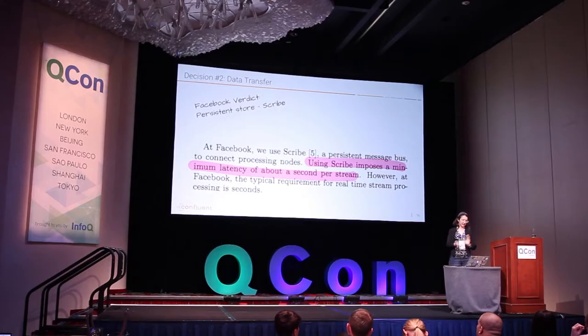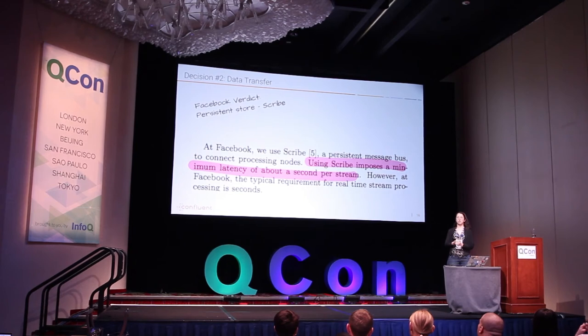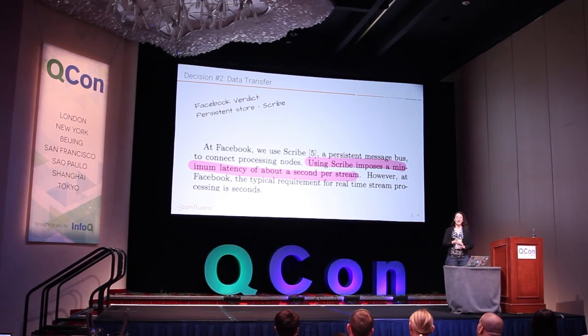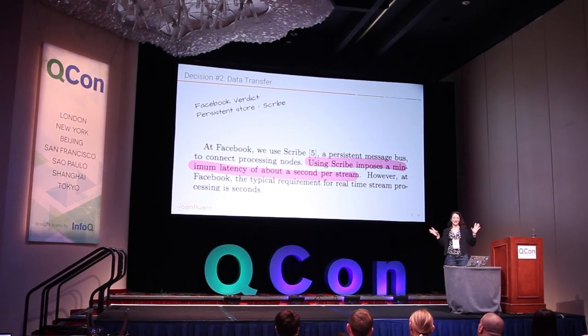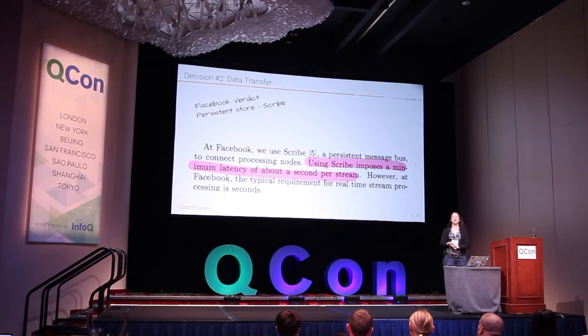So they basically said that, hey, okay, we chose this persistent message bus. We didn't go with Kafka like 99.9% of the universe. We wrote our own. We have Scribe. In their defense, they wrote Scribe at more or less the same time that Kafka was written, so they weren't really reinventing a wheel that they knew about. And then they said another one of those crazy tidbits. Using Scribe imposes minimum latency of one second per stream.